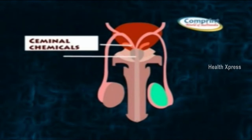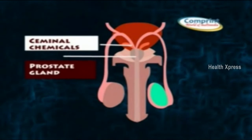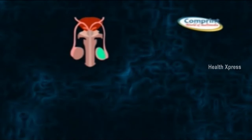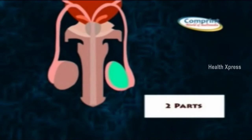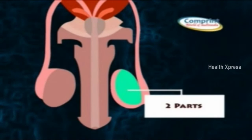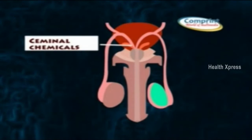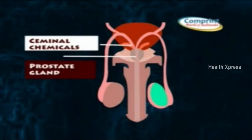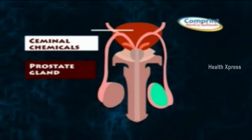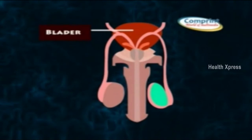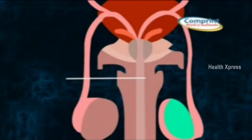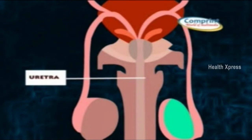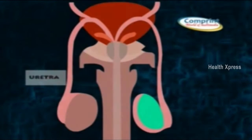At the base of the urethra, the prostate gland surrounds the ejaculatory ducts. The penis consists of two parts: the shaft and the glans. At the end of the glans, there is a small split through which semen and urine pass out through the urethra.